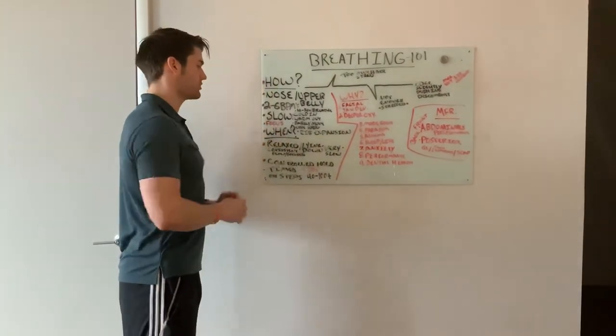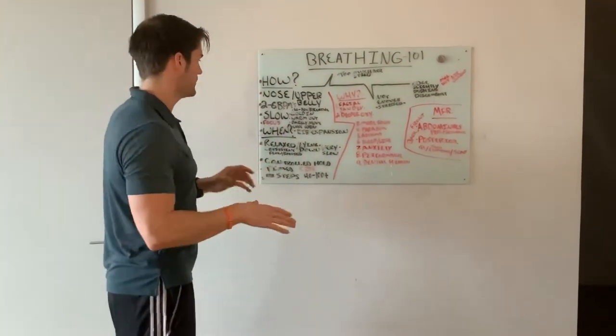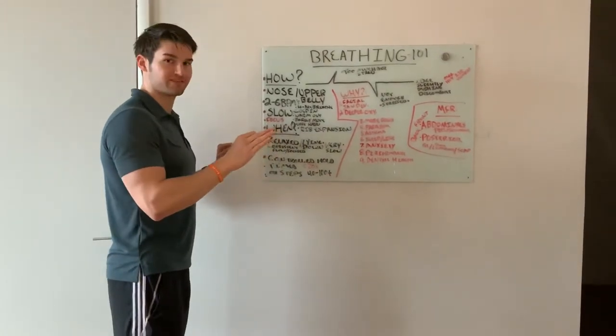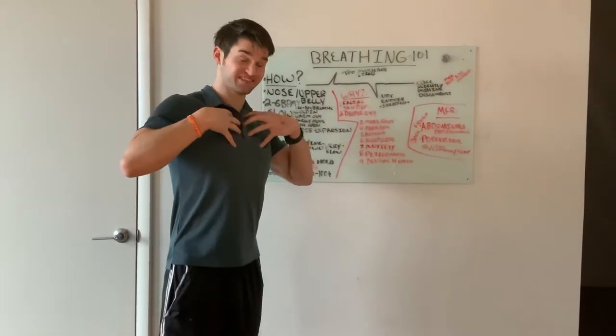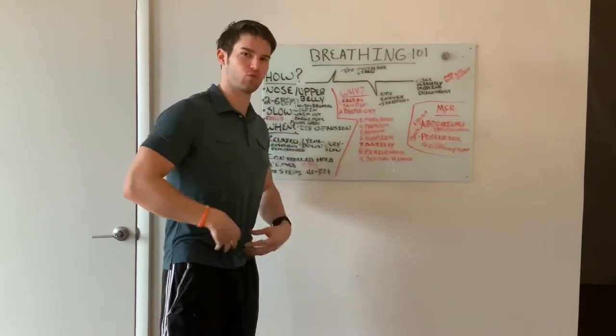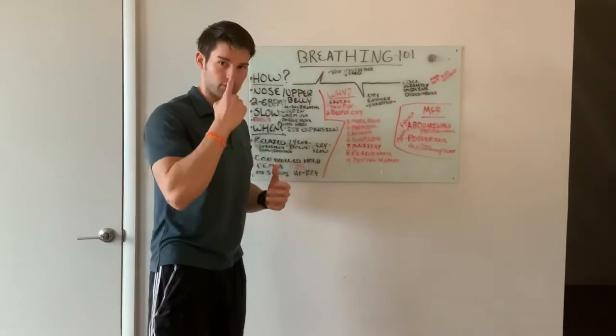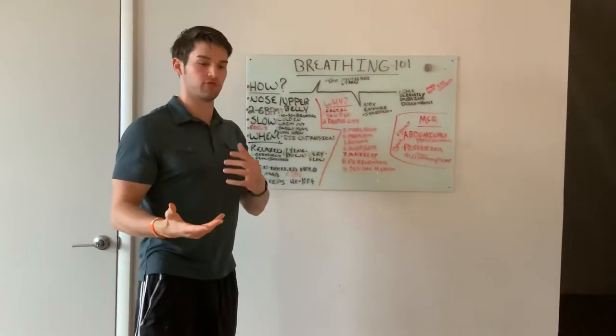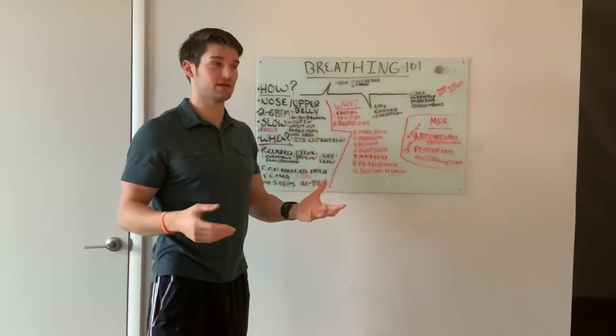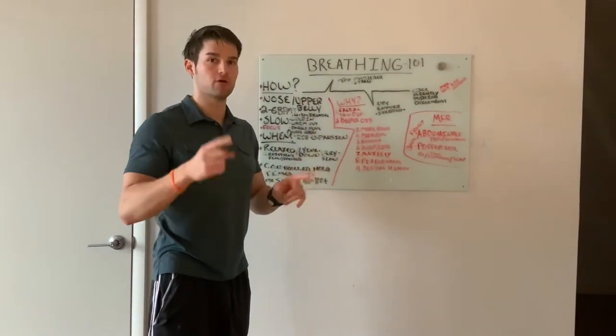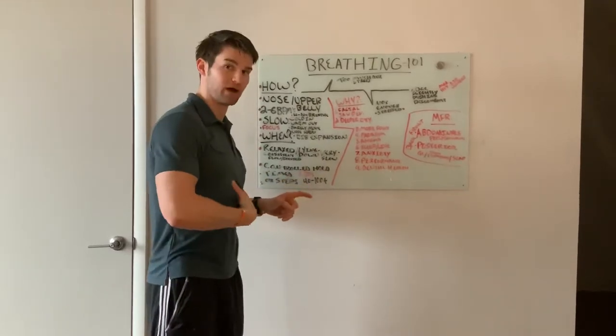All right. So how? How are we going to do this? I'm going to try to keep this as simple as possible. So the first thing you guys want to learn is stop breathing through your mouth, stop breathing through your chest, and stop breathing through your lower belly. So where do we breathe? We've got to only breathe through our nose. So if you're working out, if you're in a stress state, whatever, wherever, whenever, try to only breathe through your nose.